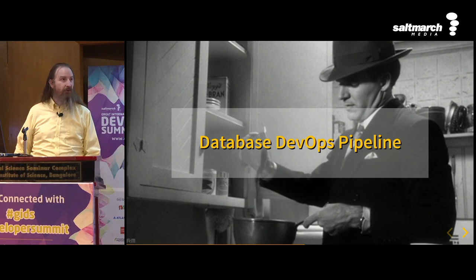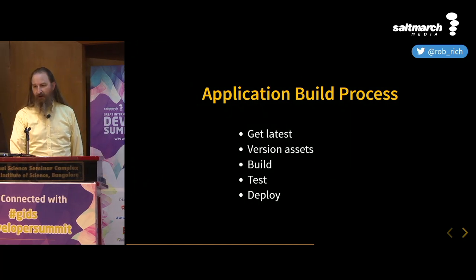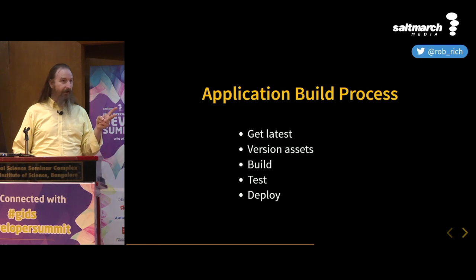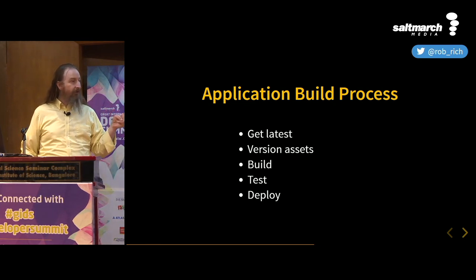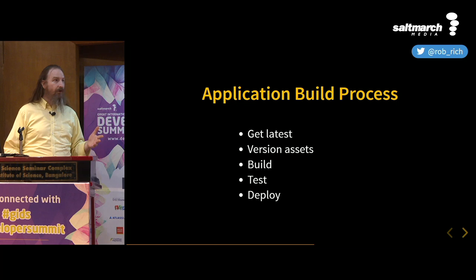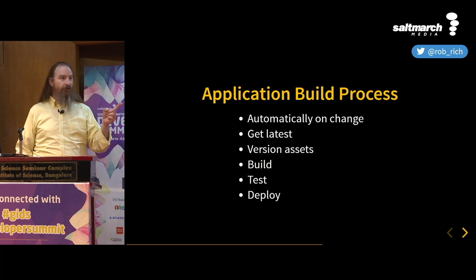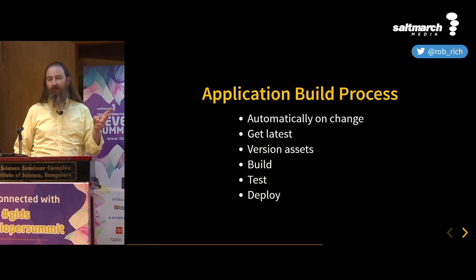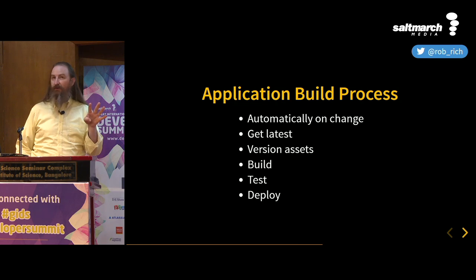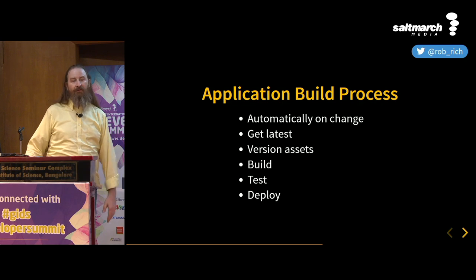Let's take a look at a database DevOps pipeline. In our previous pipeline we had: get the latest version, version our assets, write the version number somewhere, build, test, and deploy. On every change — automatically — get the latest version, version the assets, build, test, all in a neutral environment where we haven't touched production yet. If any of those fail, we stop. If all of those succeed, now let's deploy to production.